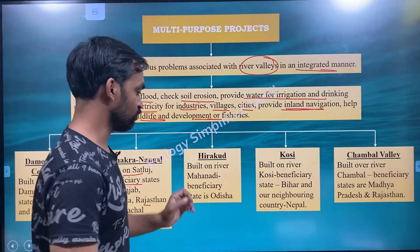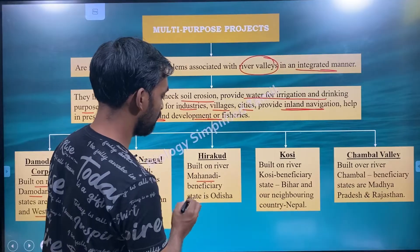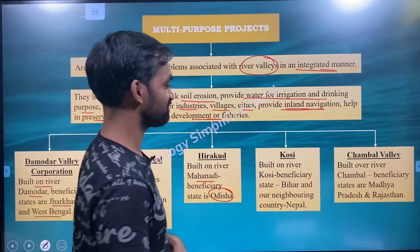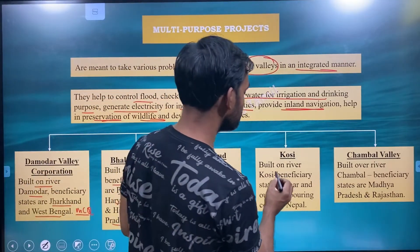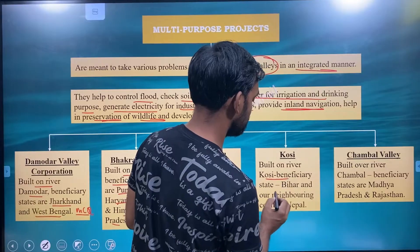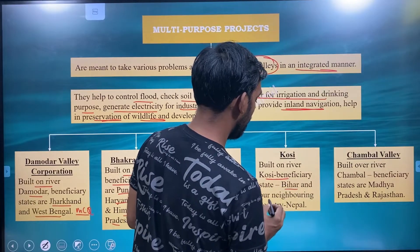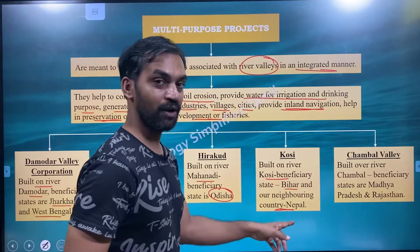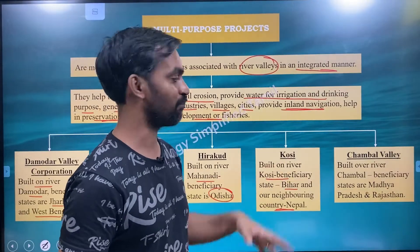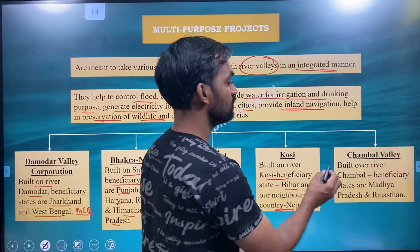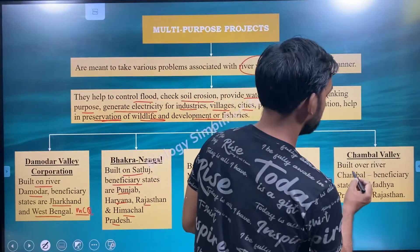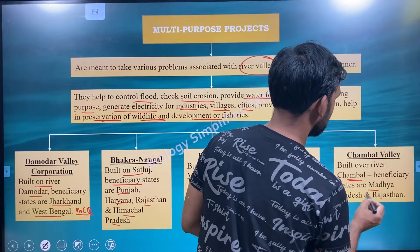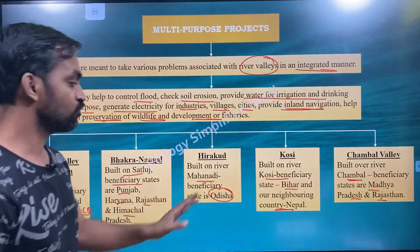Hirakud Dam is built on river Mahanadi. Beneficiary state is Odisha. Kosi Dam is built on river Kosi. Beneficiary states are Bihar and our neighboring country Nepal. Chambal Valley is built over river Chambal. Beneficiary states are Madhya Pradesh and Rajasthan.